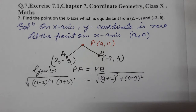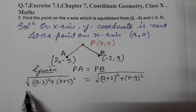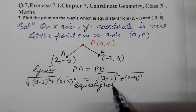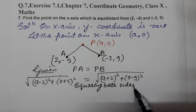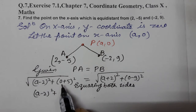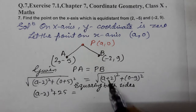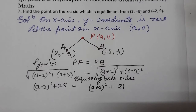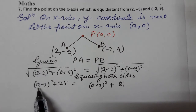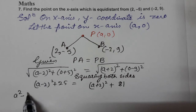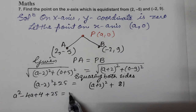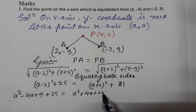Since PA = PB, squaring both sides removes the square roots. Expanding using the identity (a − b)² = a² − 2ab + b²: (a − 2)² + 25 = (a + 2)² + 81. This gives: a² − 4a + 4 + 25 = a² + 4a + 4 + 81.